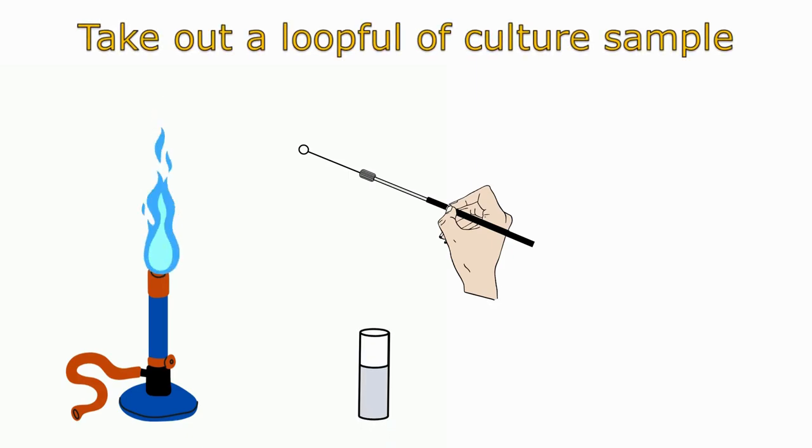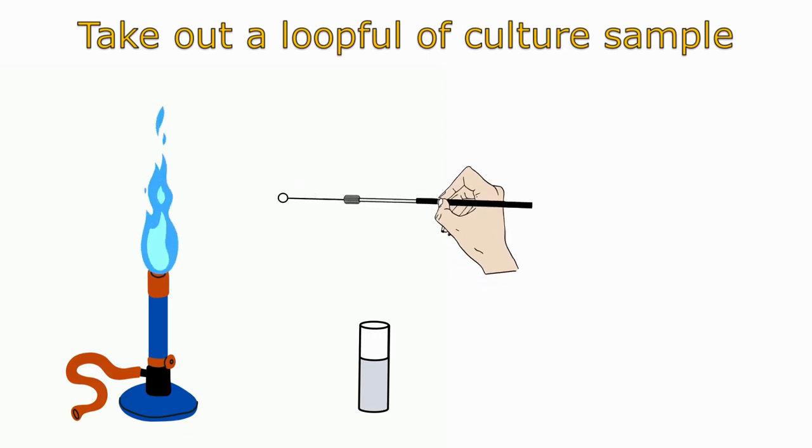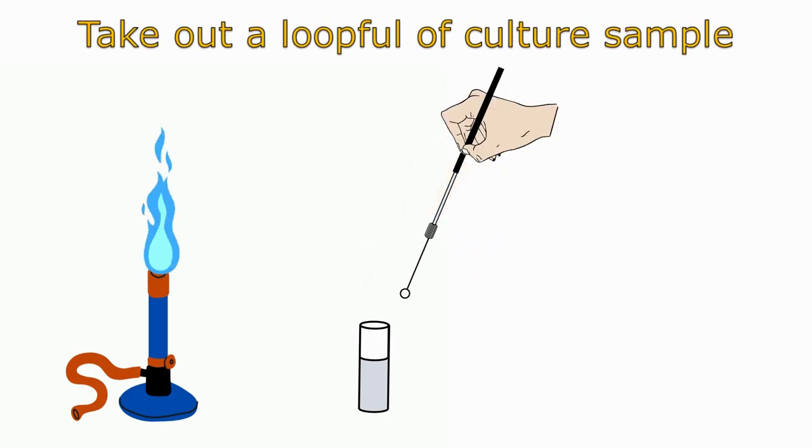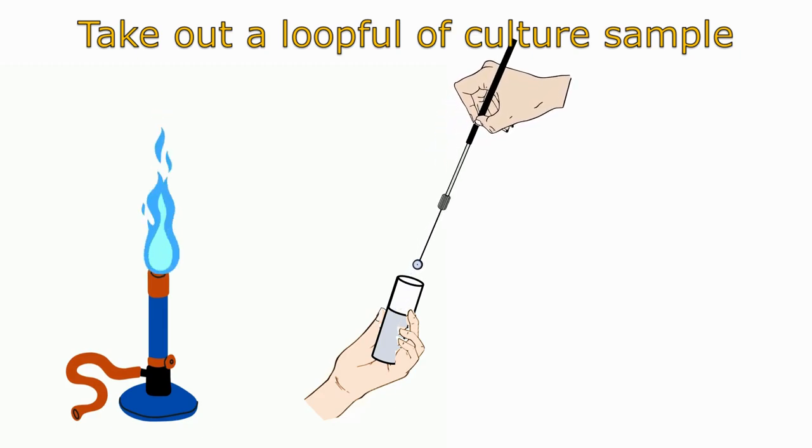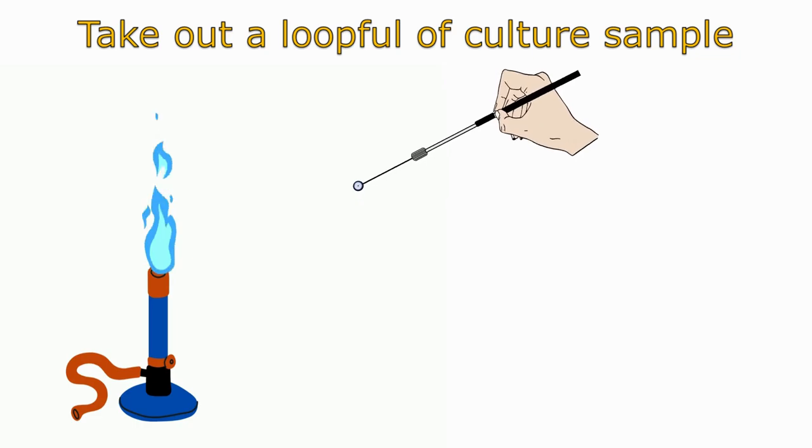Now the loop is sterile and you can take out the culture sample using this sterile loop. Dip the loop in the test tube containing a liquid sample having a mixture of bacteria. A loopful of culture sample is taken on the wire loop.